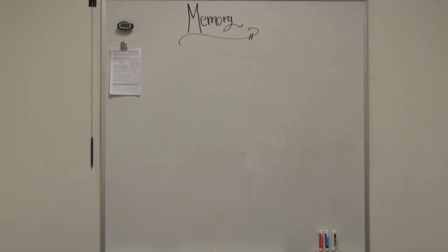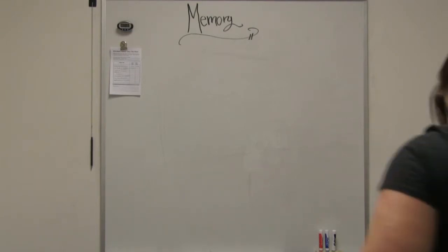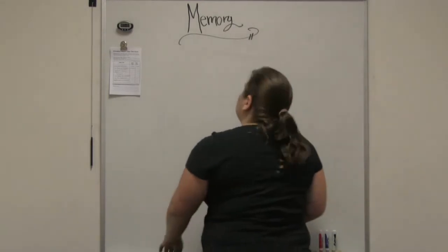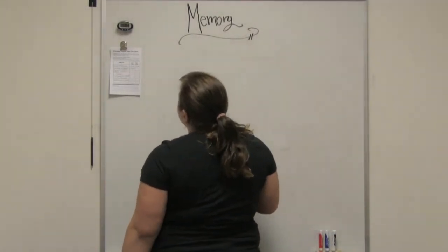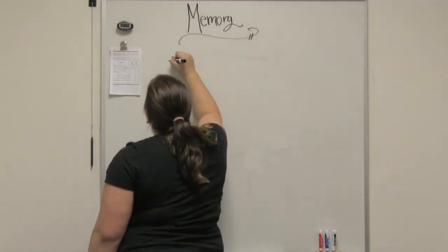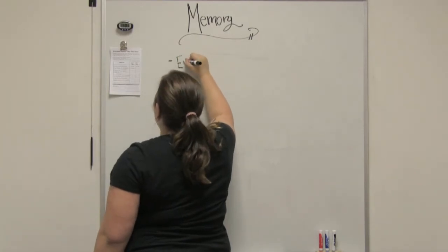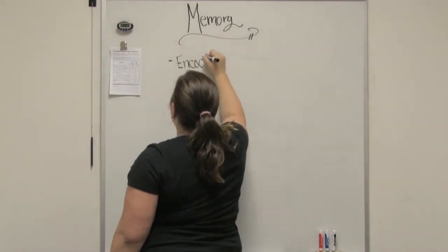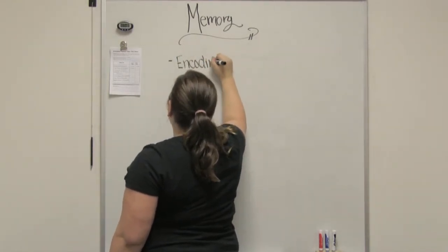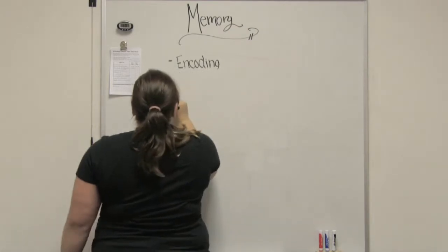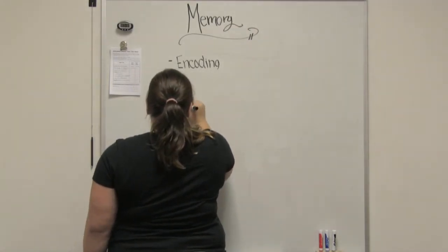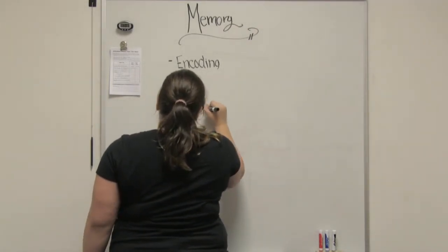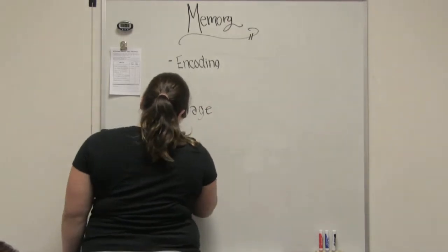Memory. Tell me what the three steps to the process of memory are. There's encoding, storage, and retrieval. That's exactly right. So we've got encoding, we've got storage, and we've got retrieval.